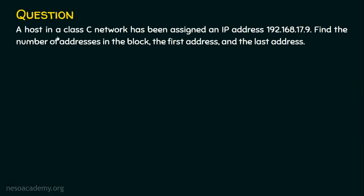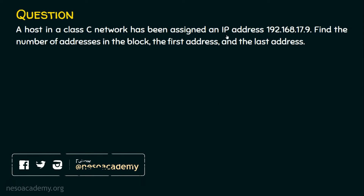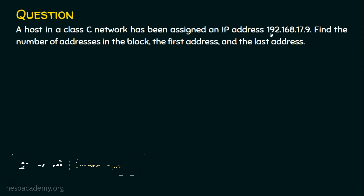The question is: a host in a Class C network has been assigned the IP address 192.168.17.9. Find the number of addresses in the block, the first address, and the last address. We are given 192.168.17.9, and it is clearly a Class C network because the first octet is between 192 and 223. We need to find how many addresses are in the block, the first address, and the last address.